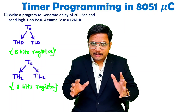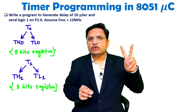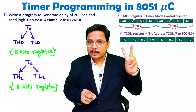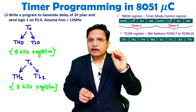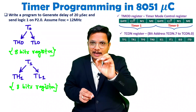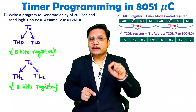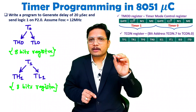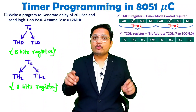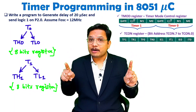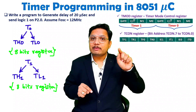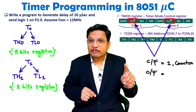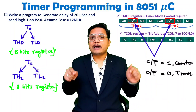Once you understand this, you need to understand two more registers: the TMOD register and the TCON register. The TMOD register explains whether you want to use these timers as a timer or as a counter. There is a CT bar bit that defines whether it is a counter or a timer.